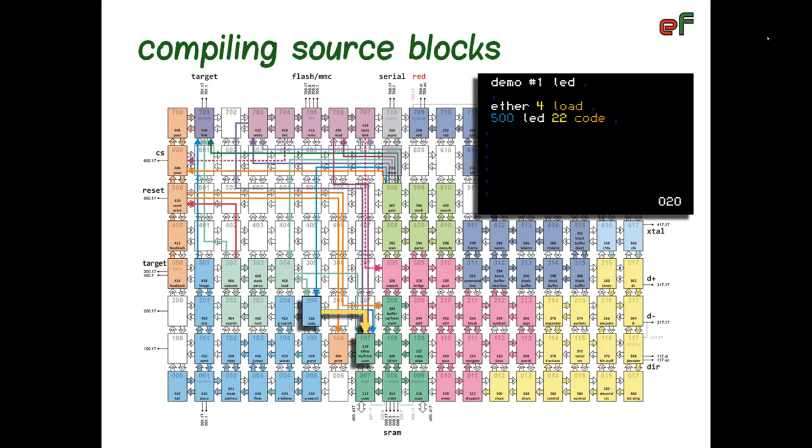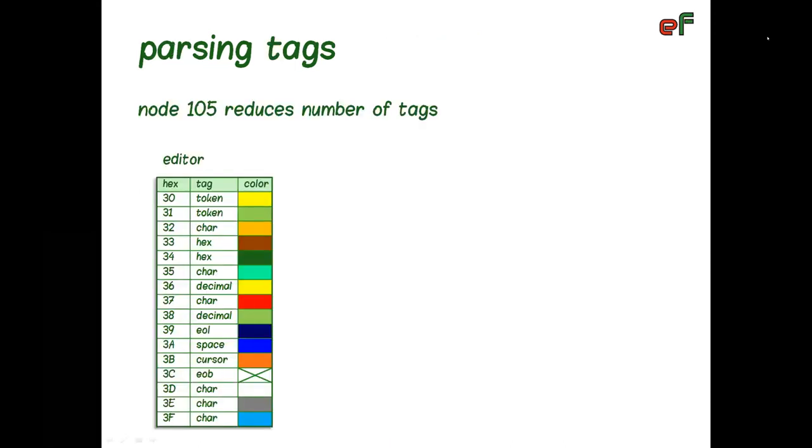When asked to compile a source block, compiler requests this block from SRAM module, which reaches into memory and sends the block content to node 205. In this node, individual symbols are extracted from the source and sent to parser in node 105. The first thing parser does is reducing number of tags. Out of 16 tags, only few are relevant for compilation.